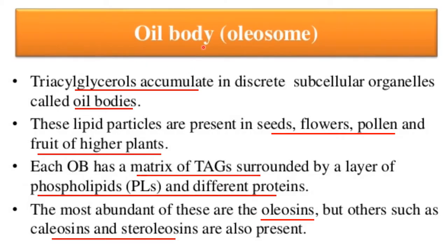Oil bodies, also called oleosomes. Triacylglycerol accumulates in discrete subcellular organelles called oil bodies. These lipid particles are present in seeds, flowers, pollen, and fruits of higher plants. Oil bodies have a matrix of triglycerides surrounded by a layer of phospholipid and different proteins.